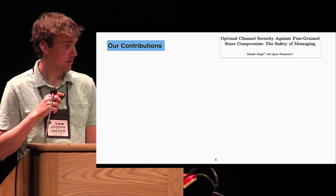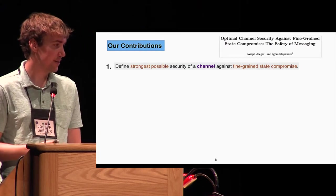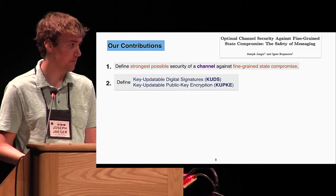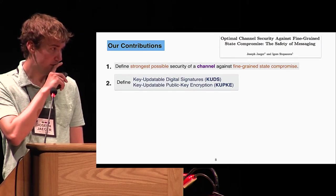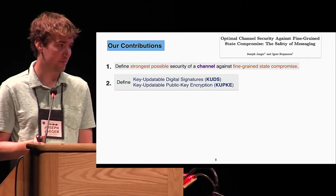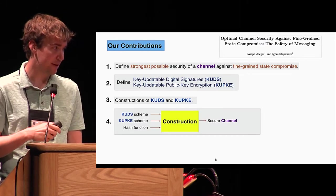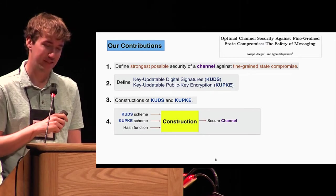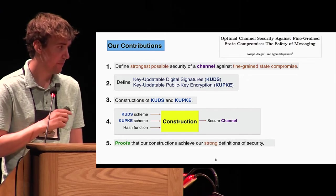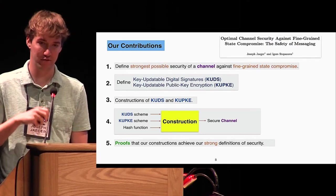To give a summary of our contributions, which I'll be covering in the rest of the talk: First, we defined the strongest possible security of a channel against fine-grained state compromise. We defined two new forms of public key primitives: key-updatable digital signatures and public key encryption. We provided constructions for these primitives, showed how they can be combined with a collision-resistant hash function to build a secure channel meeting our strong notion. And we, of course, provide proofs that all of these constructions meet the desired notions of security.